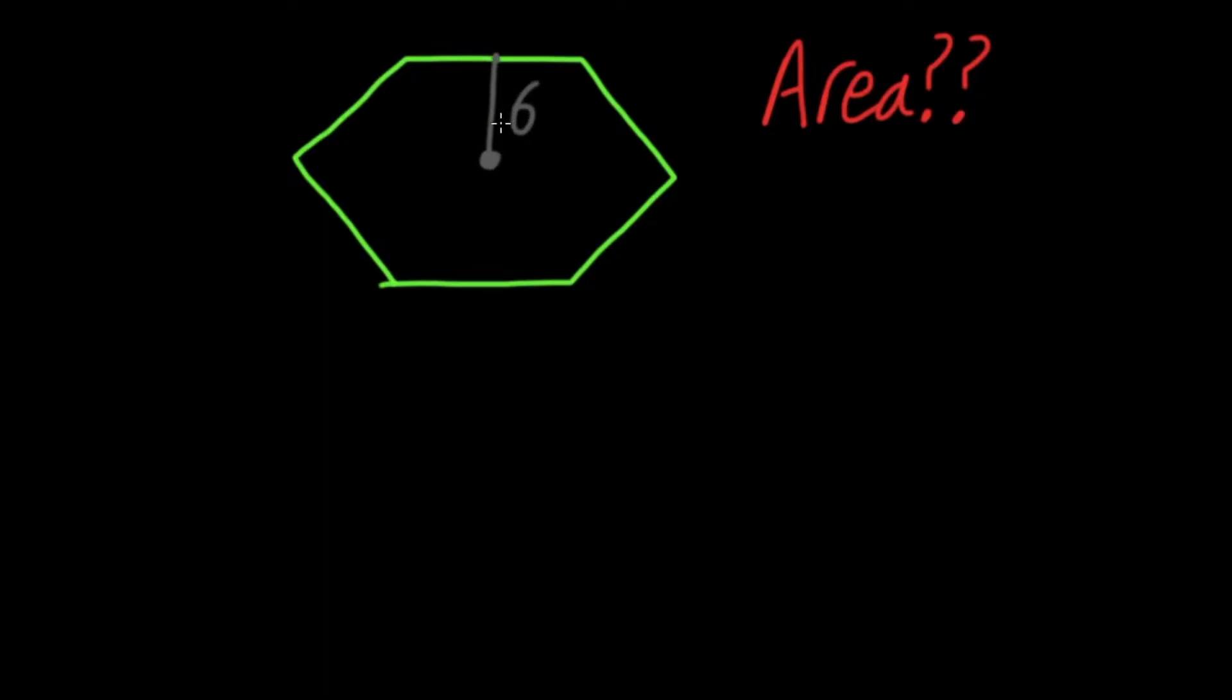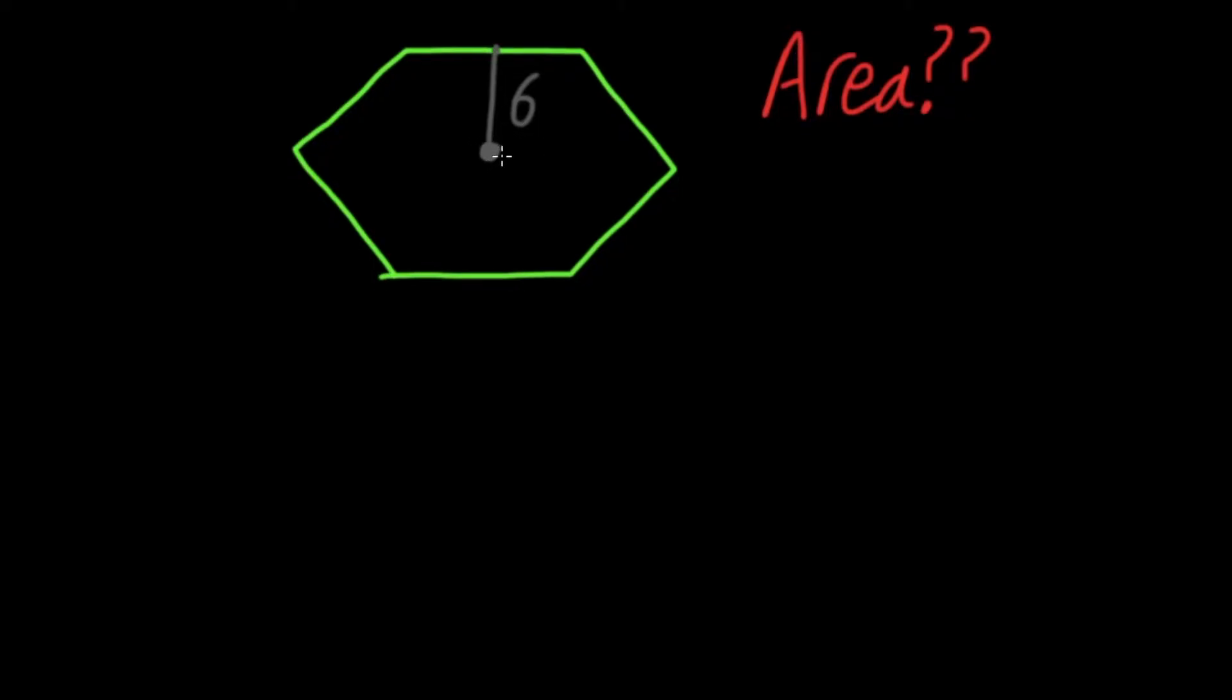The first thing you want to do in order to find the area is divide this hexagon into triangles. To do this, just draw a line from the center to each of the corners. So, we'll have a line here, here, here, here, here, and here. That gives us 6 triangles.